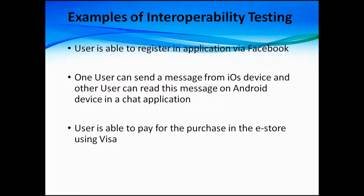When you first use some applications and go to register, it offers different options, one of which is registering via Facebook — you don't enter a password, you just click Facebook and it automatically registers you, transferring data from Facebook to the application. The second example: one user can send a message from an iOS device and another user can read that message on an Android device in a chat application. Also, a user is able to pay for a purchase in an online store using Visa — these are all cases of two software systems interacting with each other.